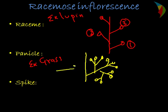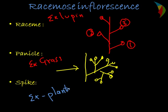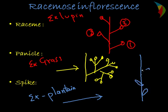The third type is the spike type. The common example is plantain. In the spike type of inflorescence, the flowers are sessile — they sit directly on the main axis without a stalk.